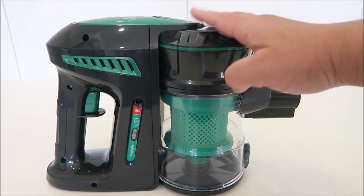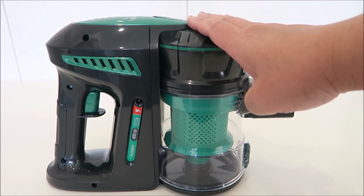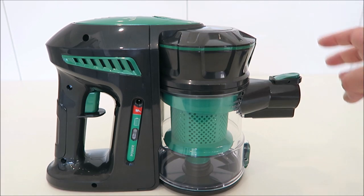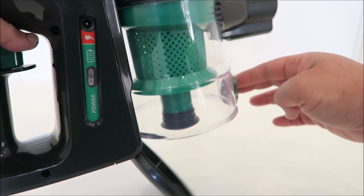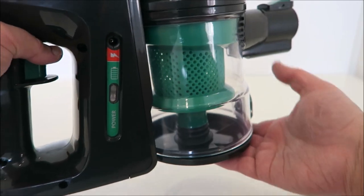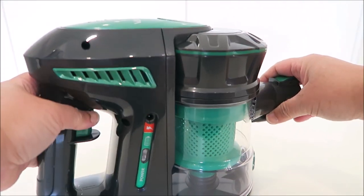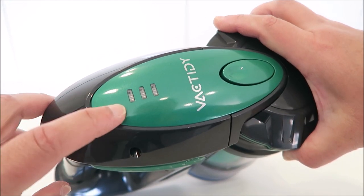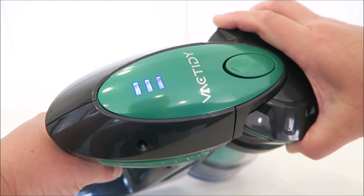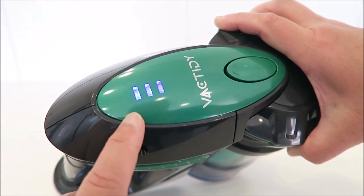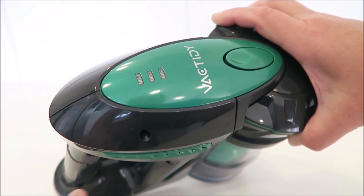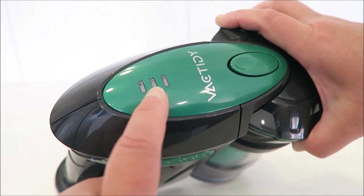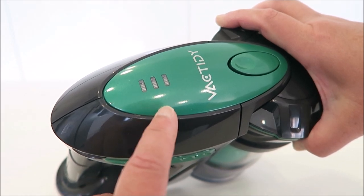So that's how easy it is to take off the dust container for cleaning. And then if you want to just clean the container itself, just press the button to unload all the dirt. And then on top here is the battery life.